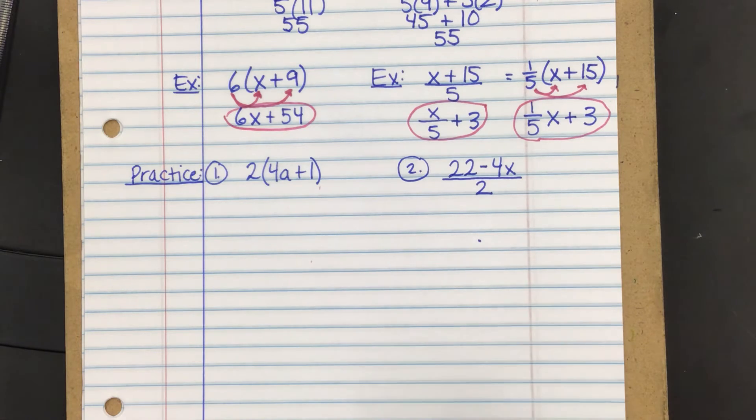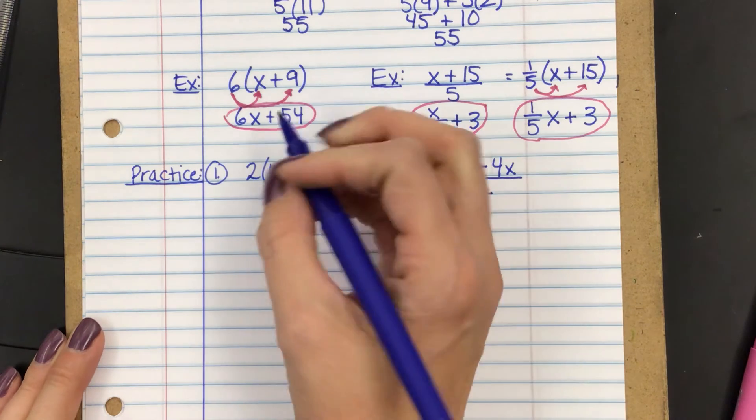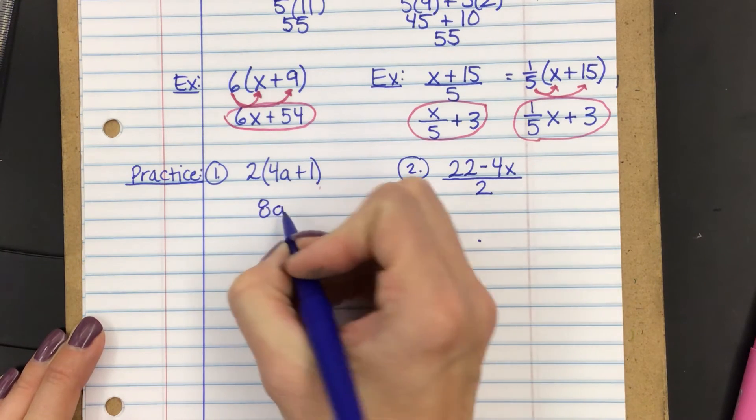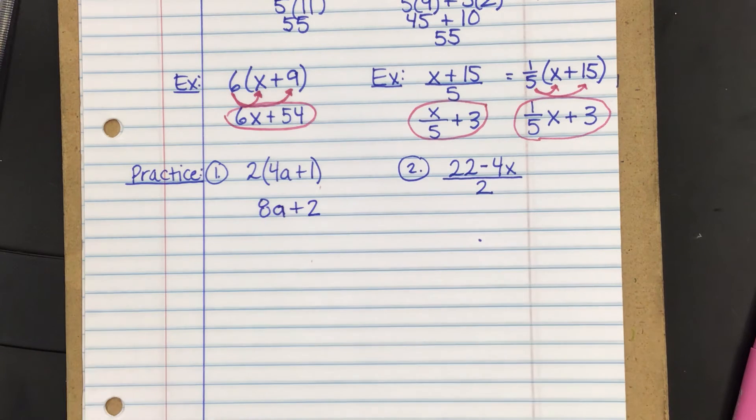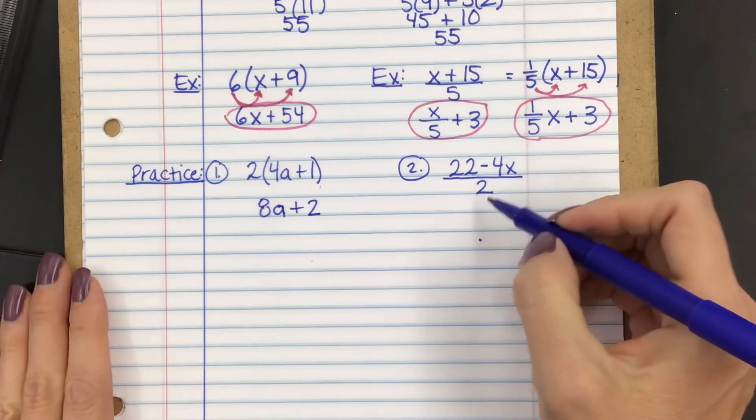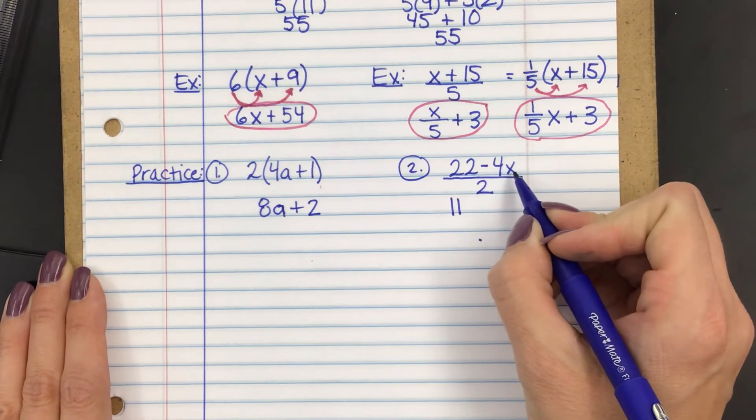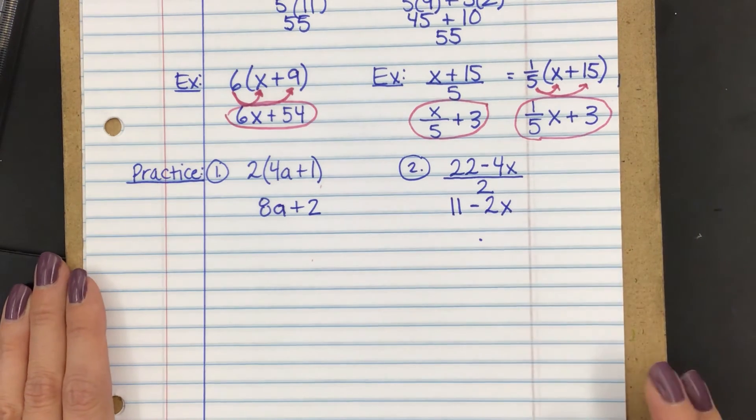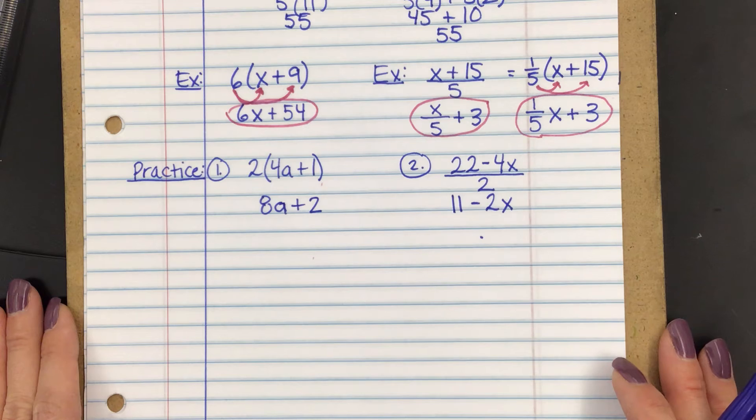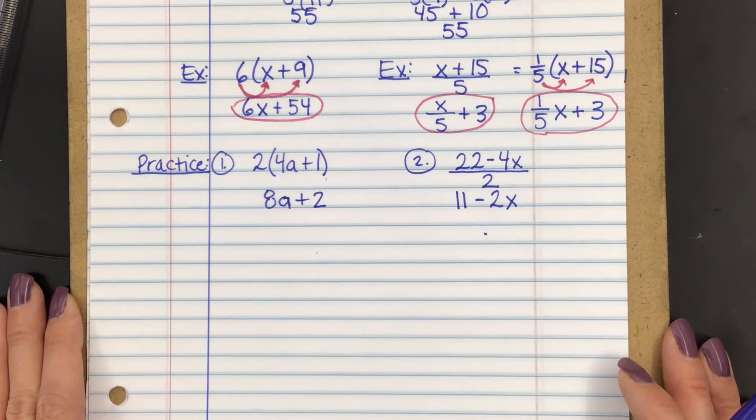Okay, let's check this out real quick. We're distributing here and here. So 2 times 4a is going to be 8a. And then 2 times 1 is 2. Make sense so far? All right. This one we're going to distribute. So 22 divided by 2 is 11. Negative 4x divided by 2 will be negative 2x. Any questions on that one? Y'all are good?